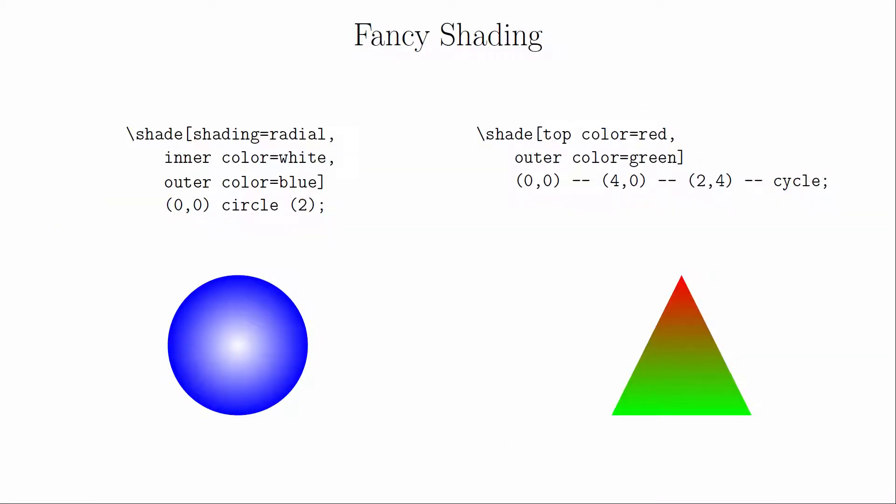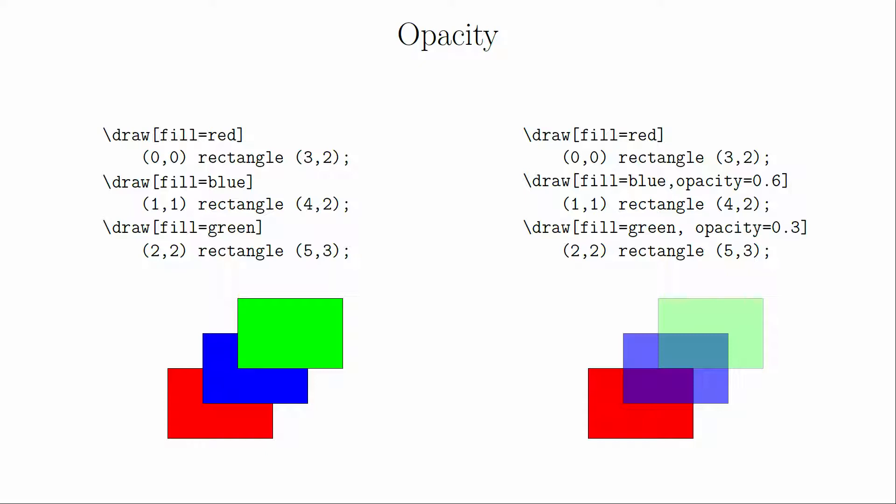Fancy shading. Ticks is able to color regions using a color gradient instead of a solid color. Opacity. Opacity is a measure of how well you can see through an image. This is great for overlaying objects on top of each other without completely hiding everything.